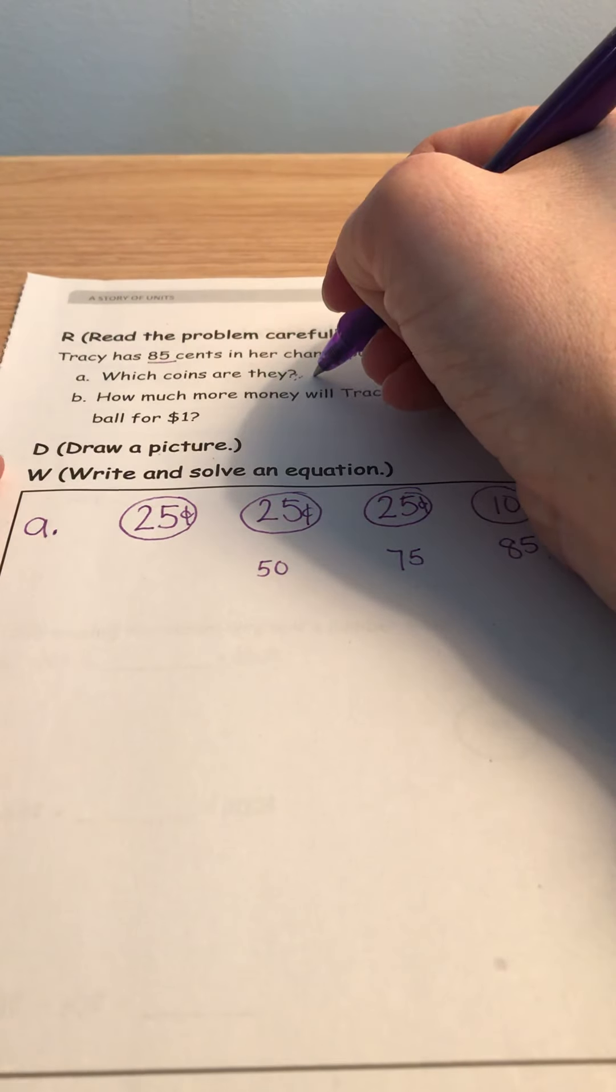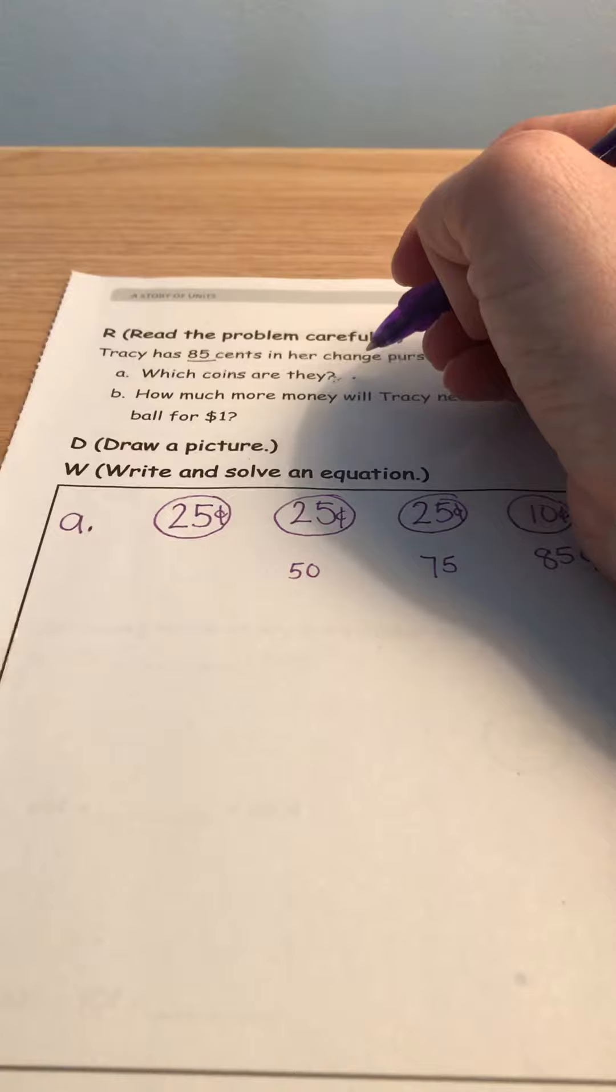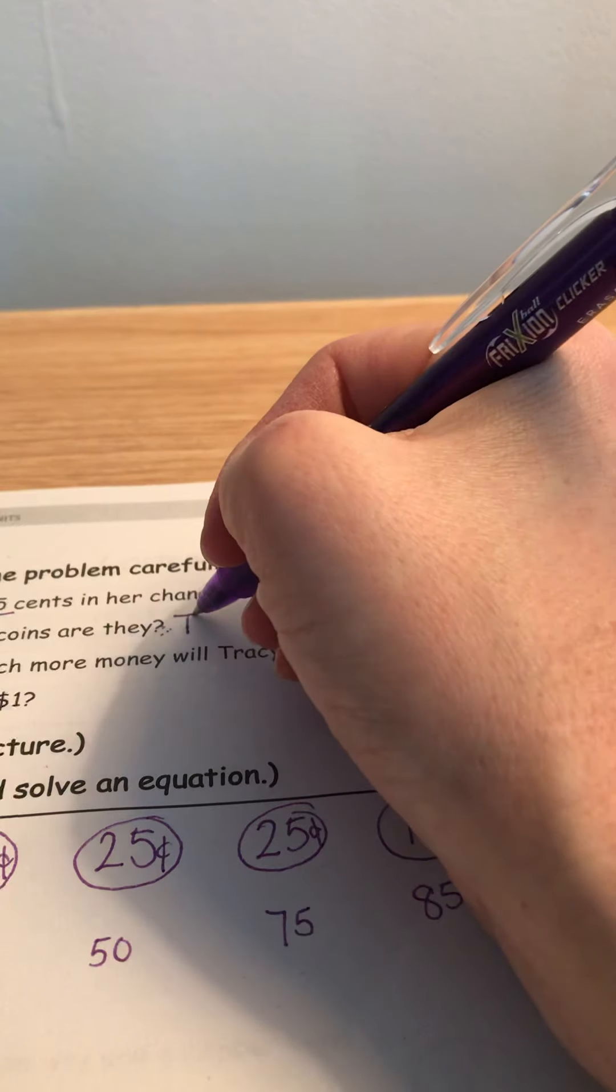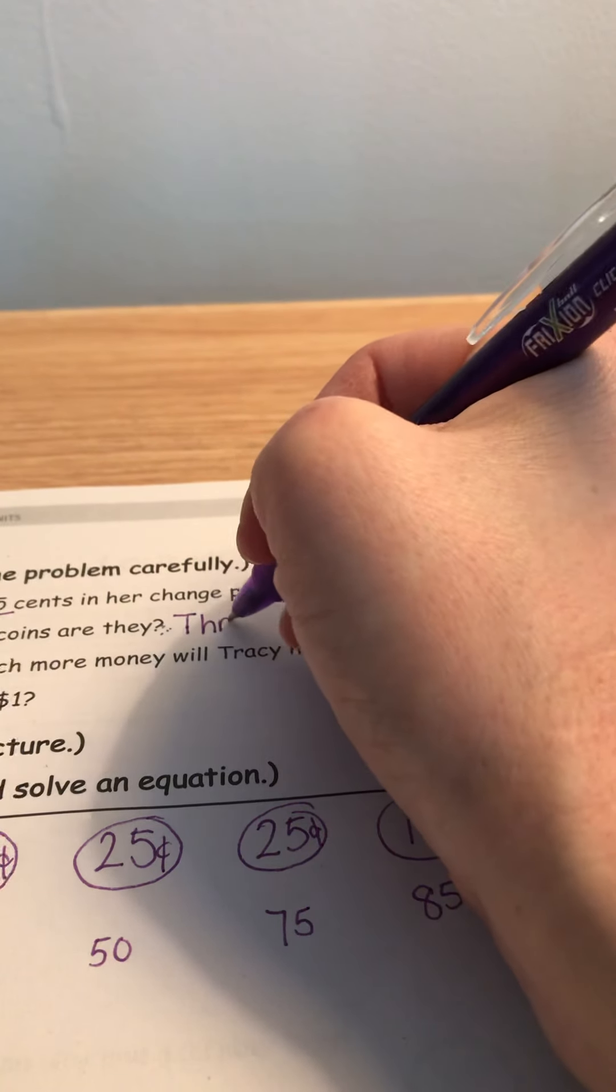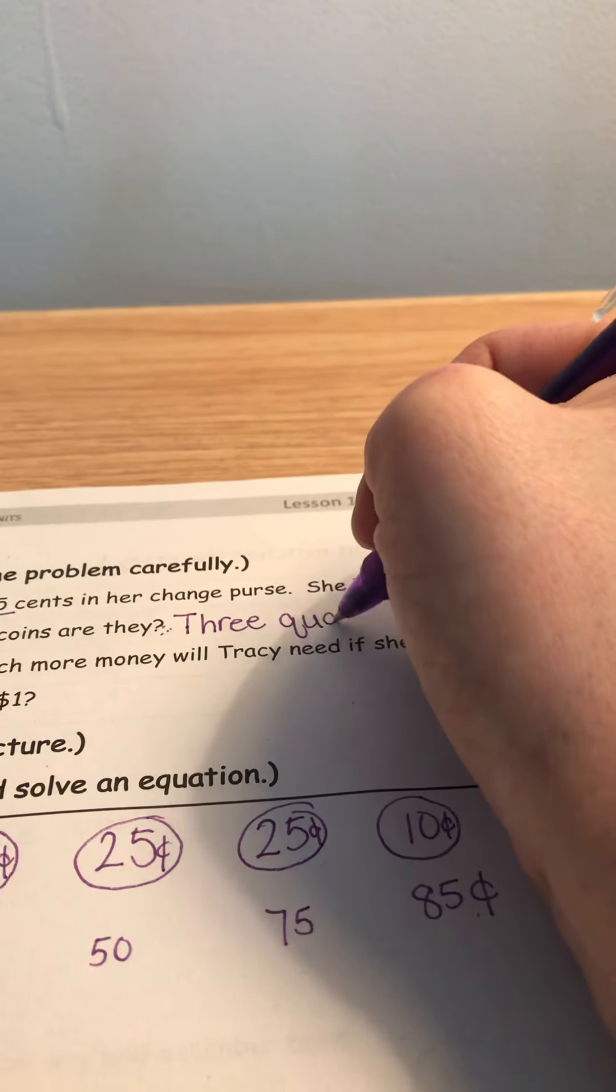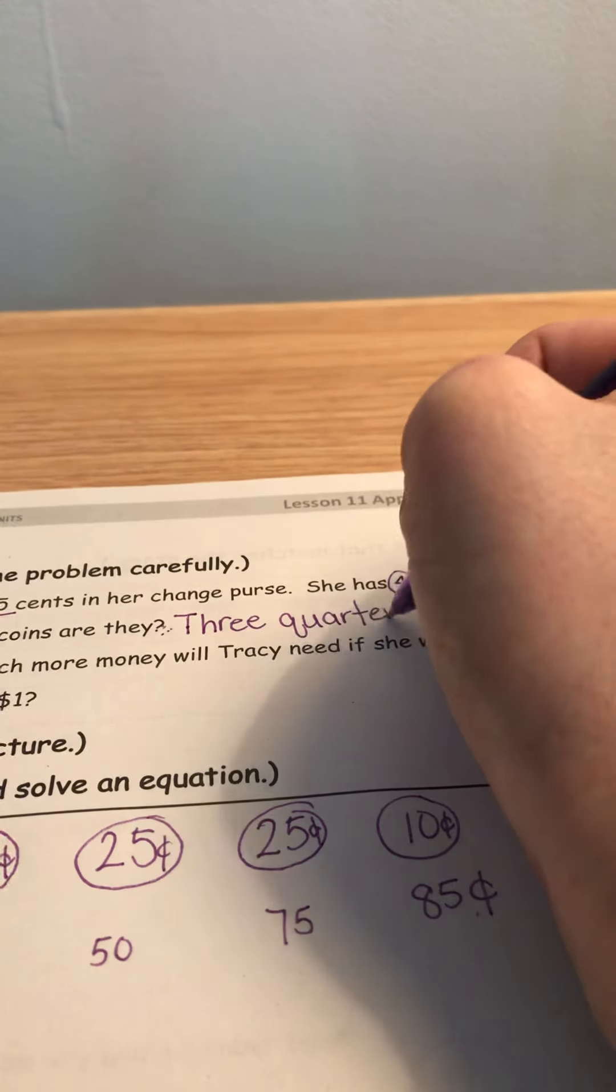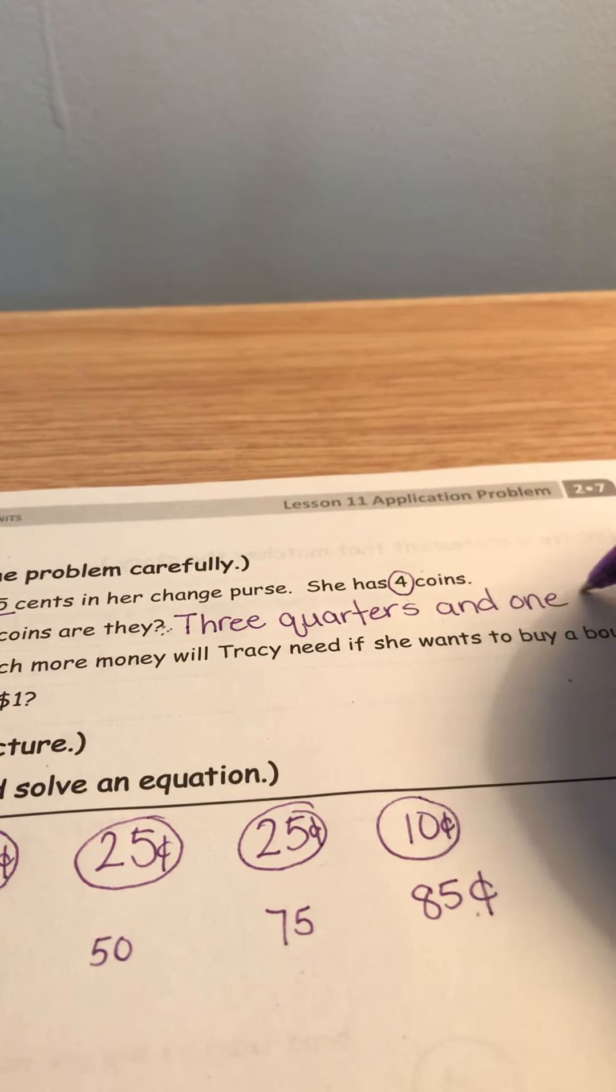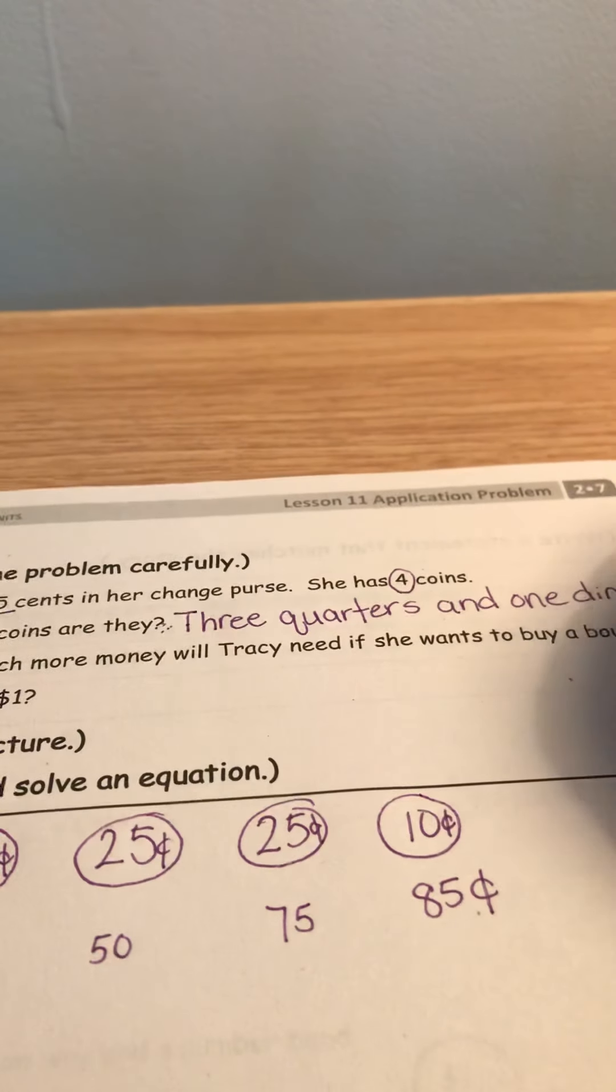We're just going to answer this right up top here. And we're going to write three quarters and one dime, okay? You didn't have to write a complete sentence for that one. Ms. Pridmore is giving you a break.